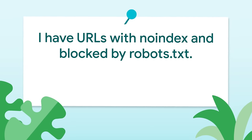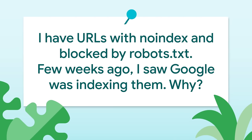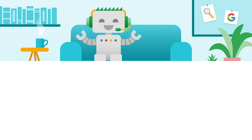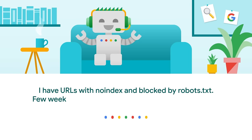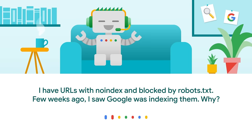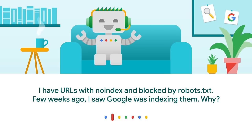Alvaro is asking: I have URLs with noindex and blocked by robots.txt, but a few weeks ago I saw Google was indexing them. What can have happened? If you block crawling via robots.txt, Googlebot cannot make a request to these URLs and thus does not see their noindex. So allowing crawling for URLs that you don't want indexed helps in this case, because we can make a request and see that they are not supposed to be indexed.